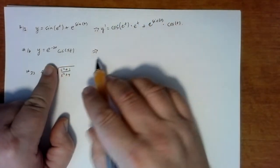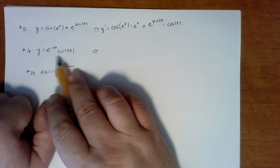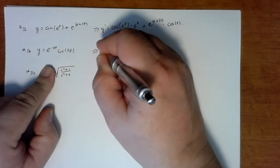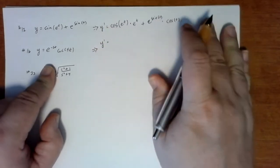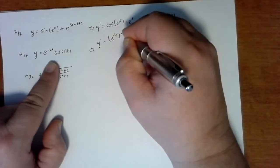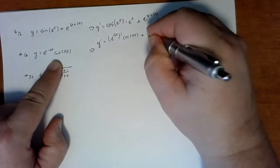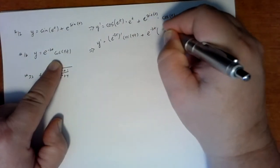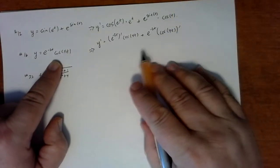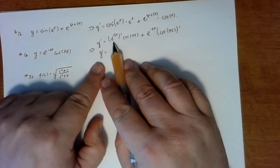Number 16 is actually a product — each of these functions are compositions. One way to set it up is to leave a little space and say we'll differentiate the first times the second plus the first times the derivative of the second. That reminds you of the product rule. So now when we differentiate, the first term would be e to the minus 2t times minus 2.